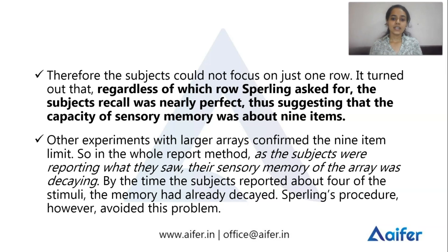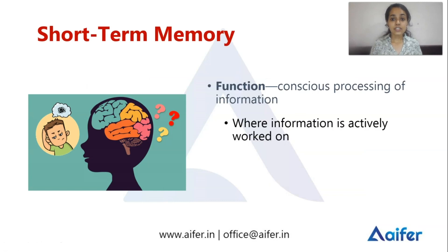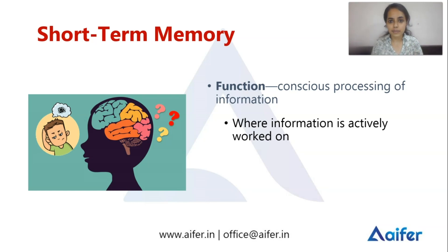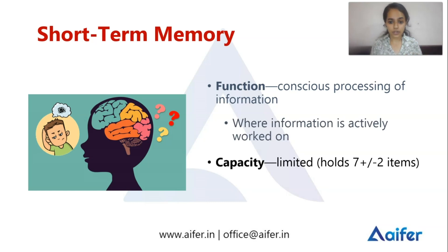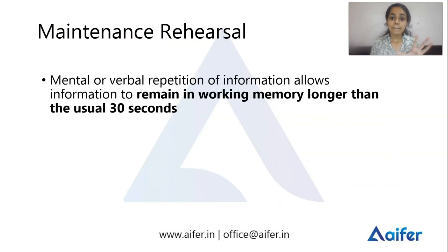Next is short-term or working memory. Its function is the conscious processing of information — where information is actively worked on. Capacity is around 7 plus or minus 2 items, known as Miller's magic number. Duration is brief: about 15 to 30 seconds.